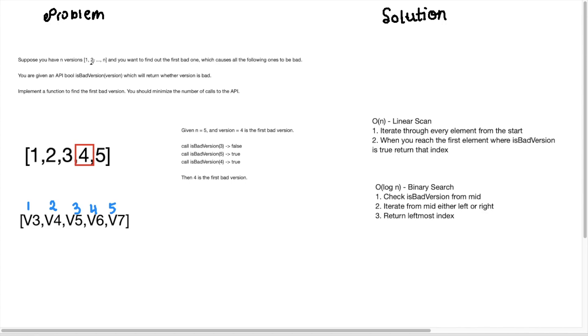So we're given an array here which has n versions and we're given the length of the array as our input n and what we want to find out is the first bad version in this array. And we're also given an API function here, is bad version, which will just tell me if the version is bad or good.